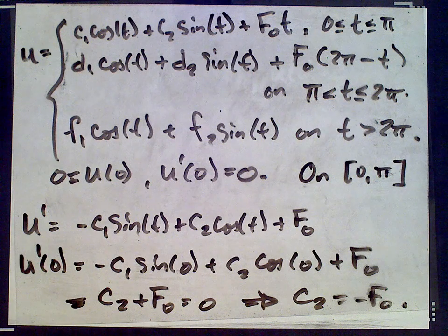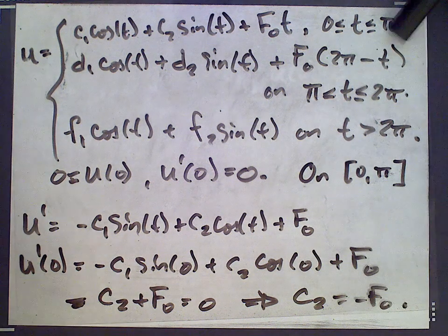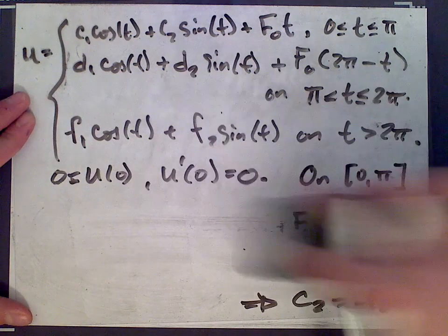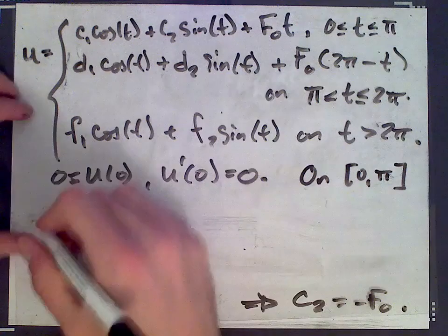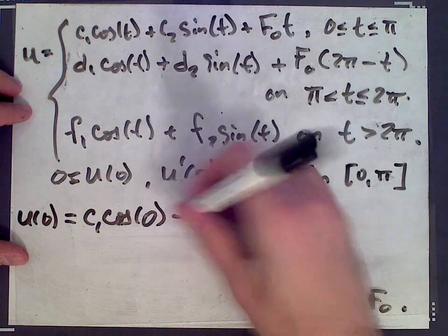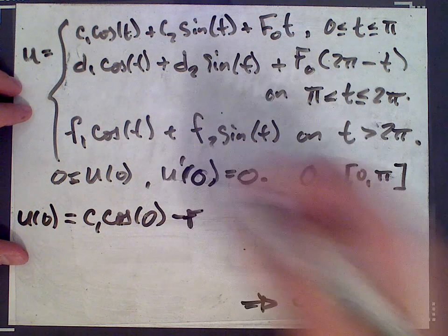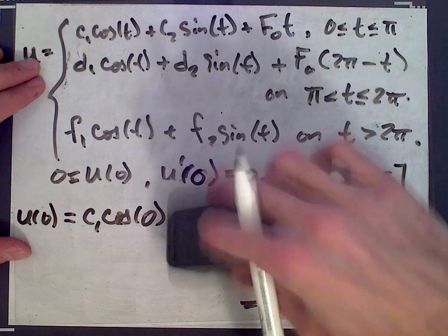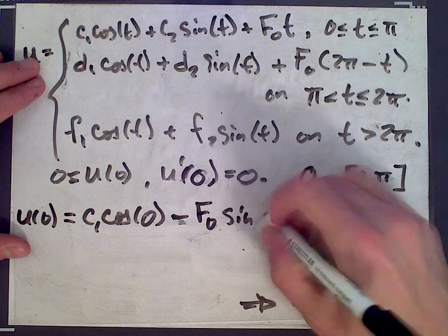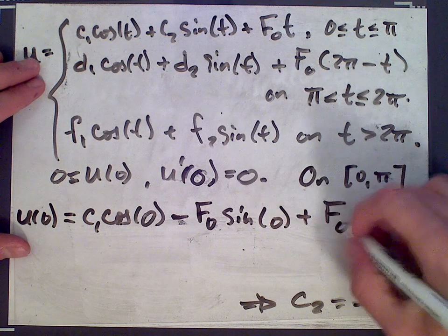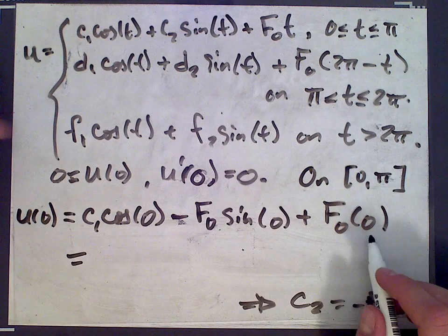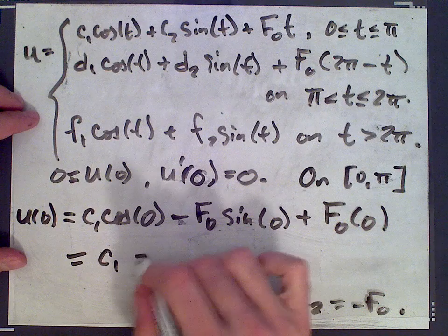And what is c1? Well, we'll plug 0 in for u. I don't know why we plugged into the derivative first. Usually you do it the other way around, but nonetheless, let's plug 0 into u. We know c2 now is negative f0. So u(0) is c1 cos(0) plus c2, so that's minus f0 sin(0) plus f0 times 0. So sin(0) is 0, so the last two terms are 0. We get c1 equals 0.